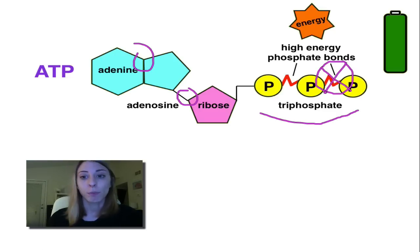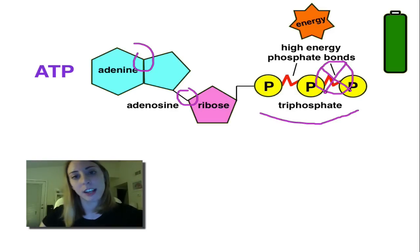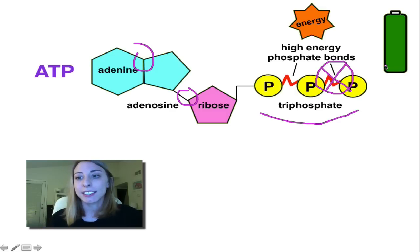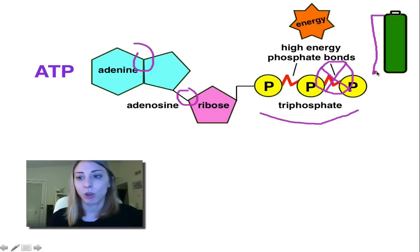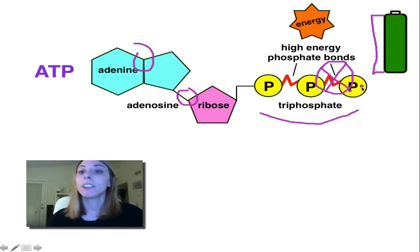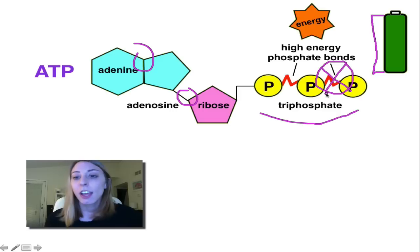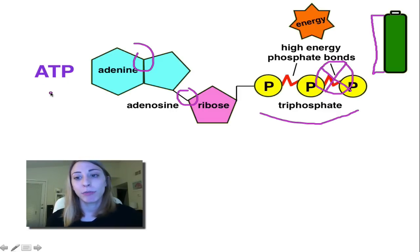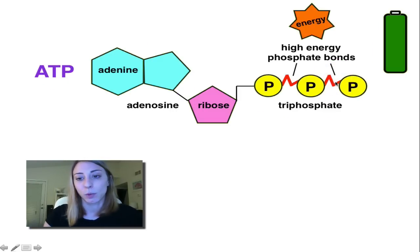So because this is full of energy that the cell can use because of this bond right here, we say that this is actually a fully charged battery. When the cell needs to fund a reaction, it needs this ATP with three phosphates and uses the energy in this last one.